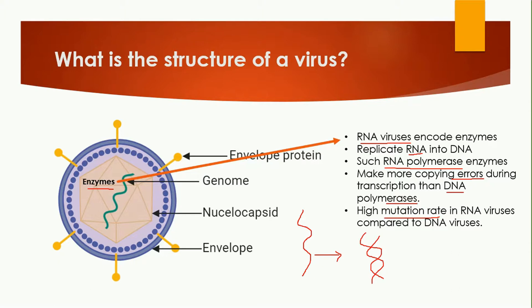This high mutation rate is the reason why curing or developing medicine for viruses is very difficult. If we make a medicine for one type of virus, in the next generation its DNA will have changed, and that medicine cannot affect the new type of virus.